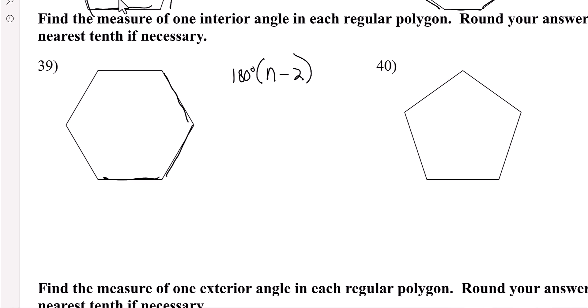one, two, three, four, five, six. So, 180 degrees, times six, subtract two. So, 180 degrees, times four. So, that's how many total degrees are in here.